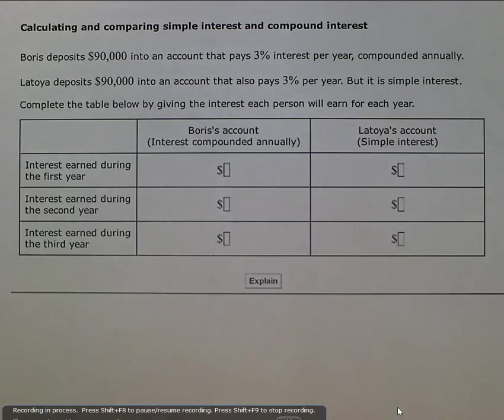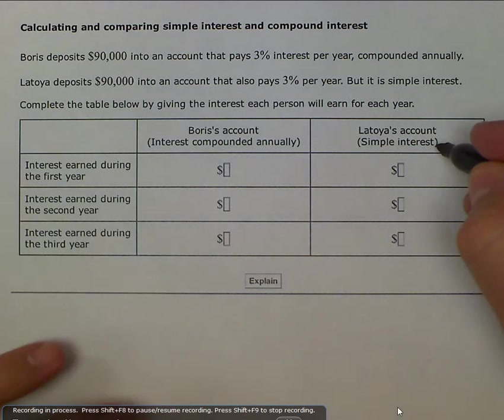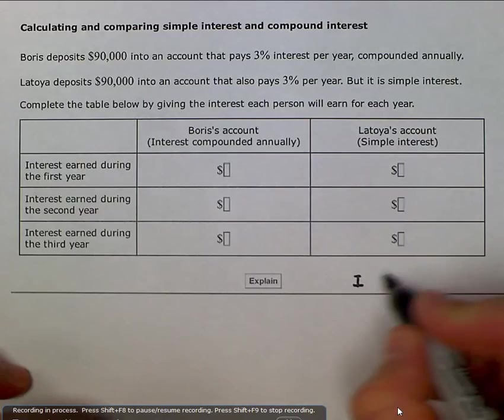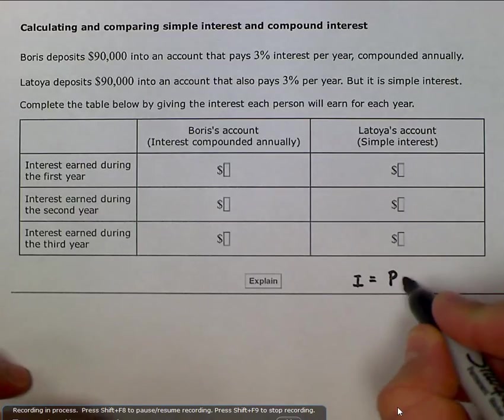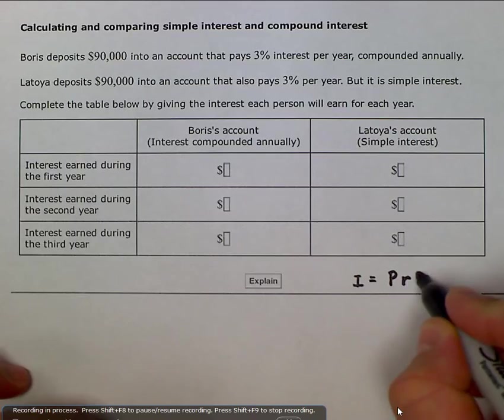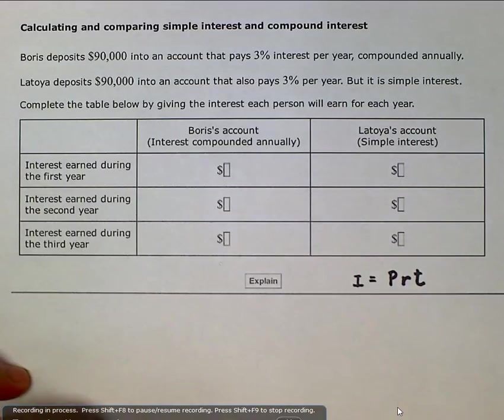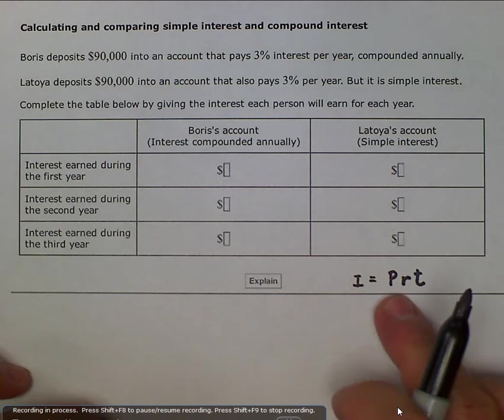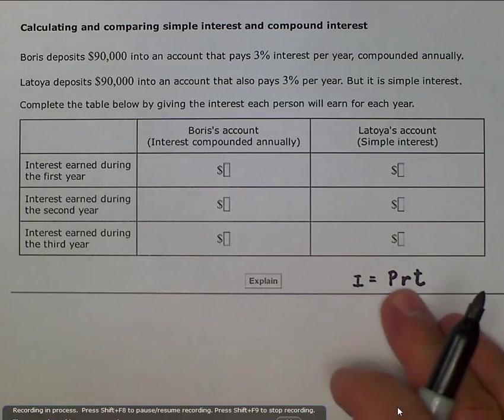So we would look here at two different formulas. Simple interest, our formula is the interest can be figured out by multiplying the original principal times the rate and then times the time. So the interest earned is going to be the original amount or the original principal times the rate or the interest rate times the time.